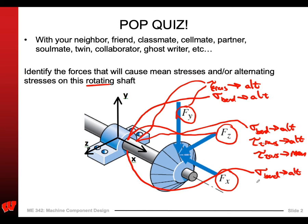What else will the axial force cause? It'll cause bending down on the bottom — sigma bend — that's going to be an alternating stress because it's rotating and not evenly distributed around the circumference. What else? It'll cause sigma axial — axial normal stress — that is evenly distributed, so that will be a mean stress. A lot going on there.